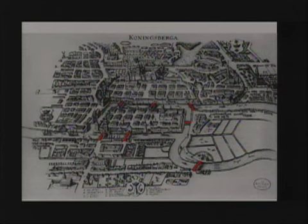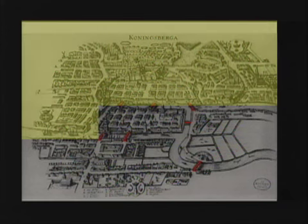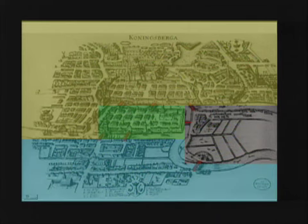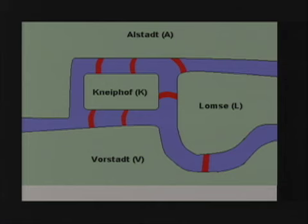Let's start back in the beginning where graph theory was born. We have to take ourselves back to the 1700s to the city of Königsberg. Königsberg was a wealthy trading city in Prussia, and you can see on your screen right now a map of the city from that time. Königsberg was divided into four parts by a river called Pregel. The top part was called Alstad, the middle island part was called Knaphof, the lower part was called Vorstad, and the right middle part was called Lomsi. These four city parts were connected by seven bridges, shown in red on the diagram.